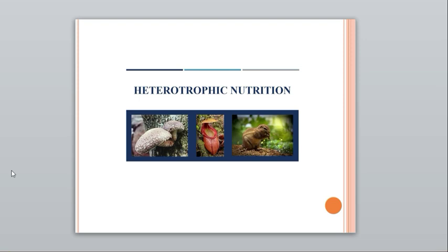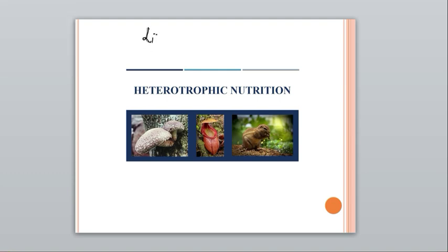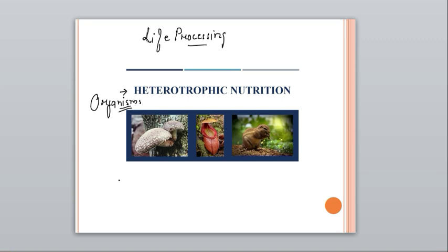We are done with the autotrophic nutrition and all its subtopics. In the chapter Life Processes, we will now start with heterotrophic nutrition and discuss it in detail. In general, consumers have the heterotrophic mode of nutrition as they depend directly or indirectly on plants. Heterotrophic nutrition means organisms depend on other organisms for their nutritional requirements.